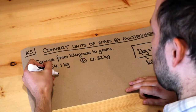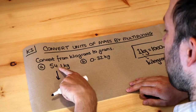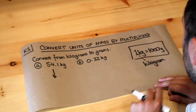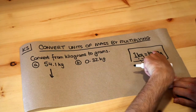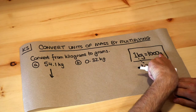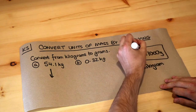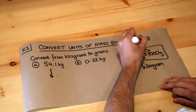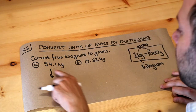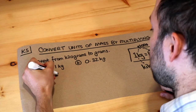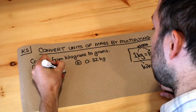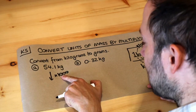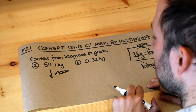Let's look at these problems. We want to get from 54.1 kilograms into grams. To get from kilograms to grams the number becomes bigger — specifically a thousand times bigger. So if we do 54.1 times by a thousand, that has the effect of moving the decimal point three places, because there are three zeros.